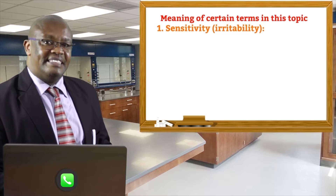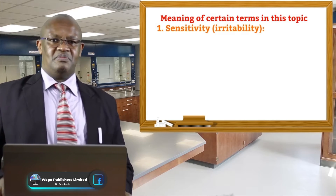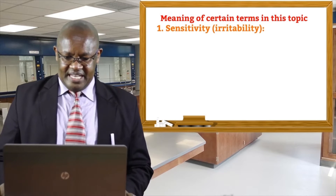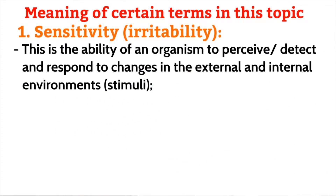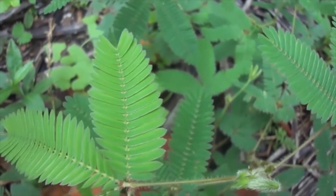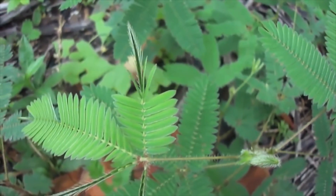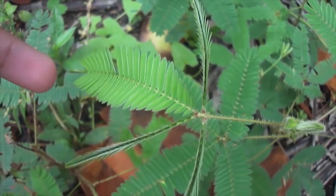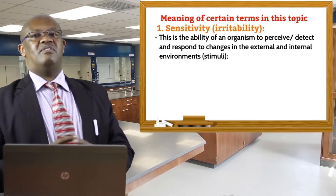The first term is sensitivity or irritability. Sensitivity or irritability is the ability of an organism to perceive or detect and respond to changes in the external or internal environment.